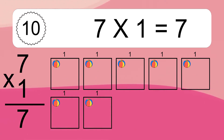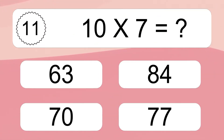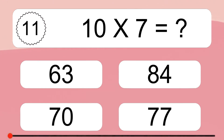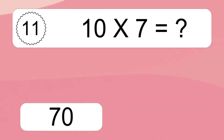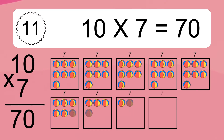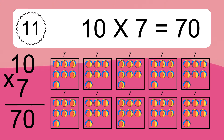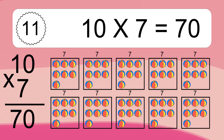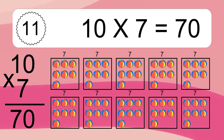10 times 7 equals what? 10 times 7 equals 70. We have 10 boxes, and each box has 7 colorful balls inside. If you count all the balls in all the boxes together, you will have 10 times 7 balls. This equals 70 balls.